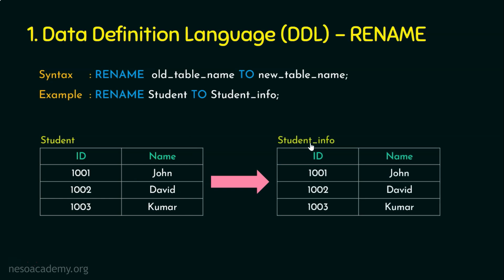After renaming, the table student_info retains the same set of columns and the same data — only the table name is changed. RENAME is a DDL command because the column names id and name are linked to the table's structure, and changing the table name deals with that structure. The syntax reads like a simple English statement: RENAME student TO student_info — that's the power of SQL, whose commands are English-like statements.